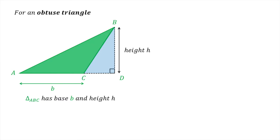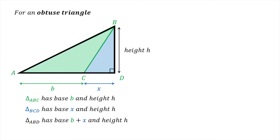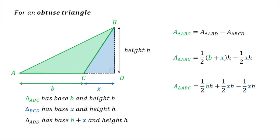The triangle whose area we want to derive is the obtuse triangle ABC, and this can be found by subtracting the area of the small triangle BCD from the area of the large triangle ABD, both of which are right triangles. The base of triangle ABC is b, the base of triangle BCD is x, and the base of triangle ABD is b plus x. Using algebra, the area of triangle ABC equals half times (b plus x) times h minus half times x times h. Expanding gives half bh plus half xh minus half xh. The last two terms cancel, leaving area equals half times base times height.